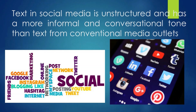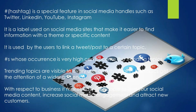Text in social media platforms is unstructured and has a more informal and conversational tone than text from conventional media. Hashtag is a special feature in social media handles such as Twitter, LinkedIn, YouTube, and Instagram. It is a label used to make it easier to find information with a theme or specific content. Hashtags with very high occurrence can become trending topics, visible to every user, attracting a wider audience. For businesses, it makes it easy to find social media content, increase engagement, and attract new customers.